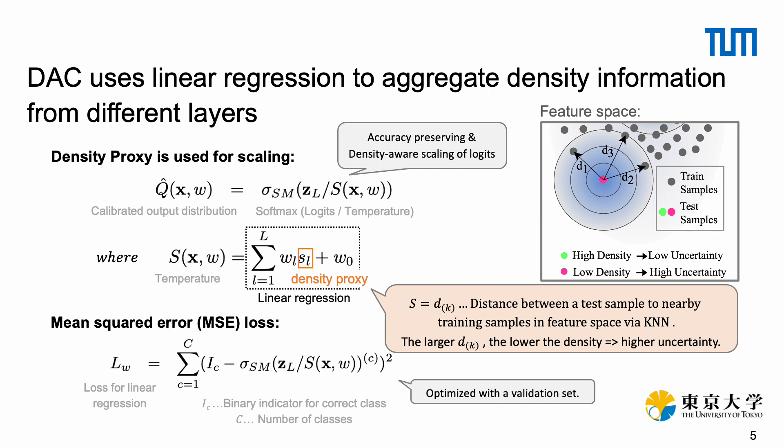We estimate the density proxy by calculating the distance between a test sample and nearby training samples in feature space via KNN. We repeat this process for different layers in the underlying classifier and combine them via linear combination, which we optimize via linear regression.